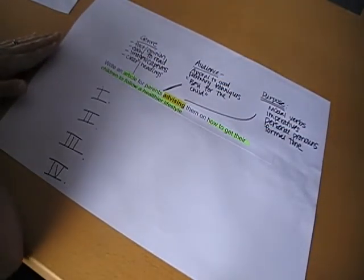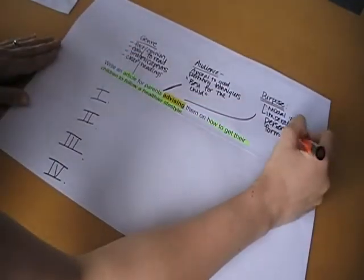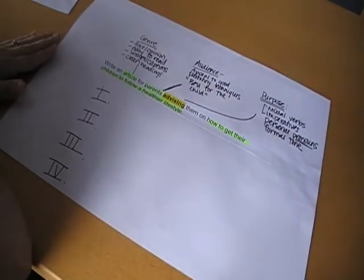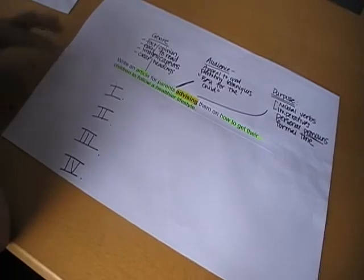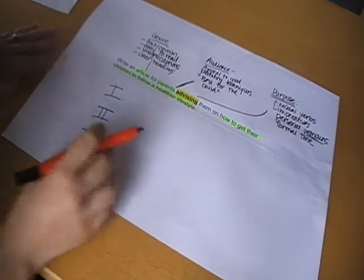So I'm going to tell them what to do by using my modals and imperatives. And I'm going to make it personal for them by referring to I and you and we. Now the next thing I need to do is take a look at the subject matter. How to get their children to follow a healthier lifestyle. And I need to do that by making a four part outline.